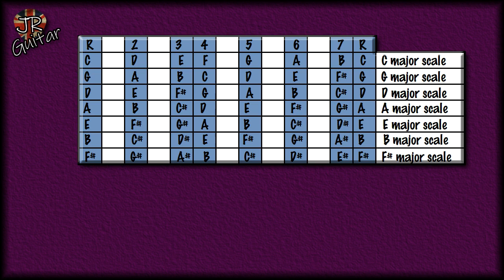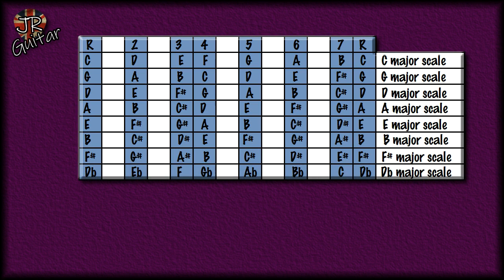Let's take the fifth note of the F sharp major scale — that's a C sharp — and we're going to call it a D flat and build the D flat major scale. The reason we call it D flat is because if we kept it as C sharp and went C# D# E# F# G# A# B# C#, you'd get another awkward situation where you're having to call a C note by the name of B sharp. We want to minimize that kind of thing.